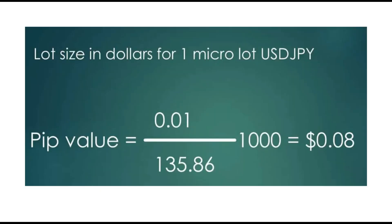The formula to calculate lot size in dollars for one micro lot of USD/JPY is this: the pip value in dollars — the first thing you need to see is the lot size. The lot size for a micro lot is 0.01, for a mini lot it is 0.1, and for a standard lot it is 1. Then you divide by the exchange rate — for example, around 110 for USD/JPY. The same formula applies for GBP/JPY or EUR/JPY.